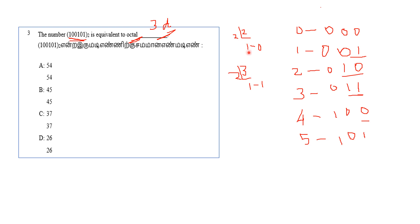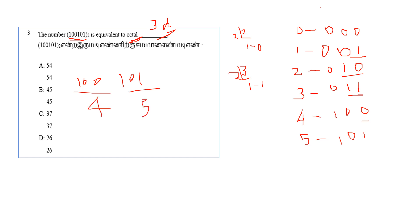Taking the binary digits in groups of three: the group 100 equals 4, and the group 101 equals 5. So the answer is 45. Option 45 is the correct answer. It is a very easy sum.